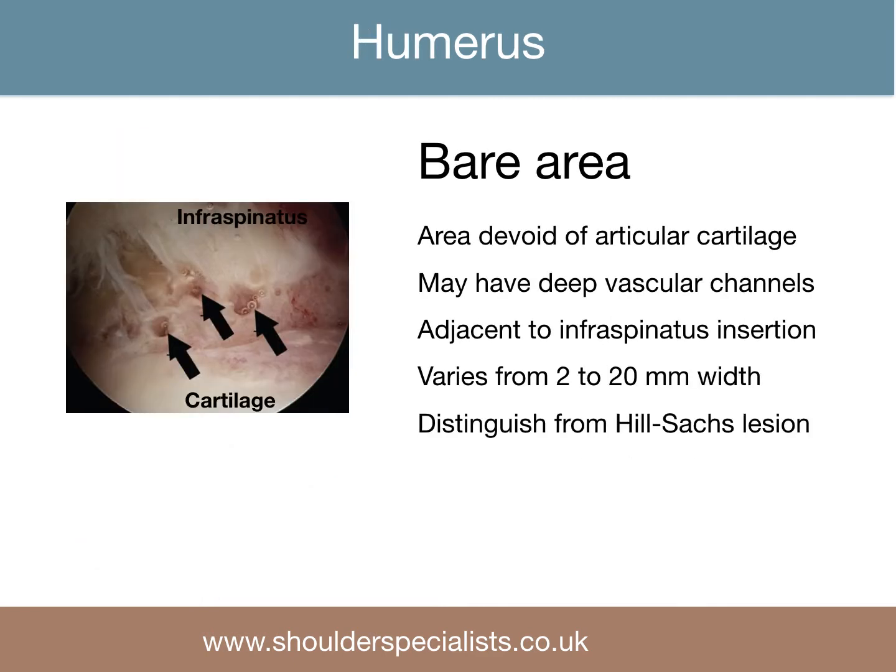There is also a bare area on the humerus which is devoid of cartilage, of variable width, adjacent to the infraspinatus insertion. This may contain deep vascular channels, and should not be confused with a Hill-Sachs lesion, which will have normal cartilage medial to it.